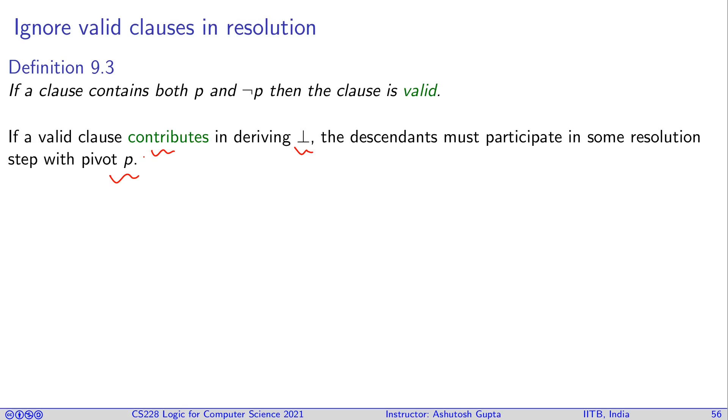If a valid clause contributes to deriving false, then at some point of time you want to remove P and not P, both of them. The resolution step is counterproductive, i.e., resolvent is superset of some antecedent. So, let's see by example.